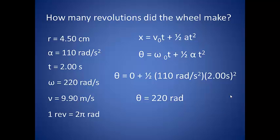we take our number of radians, which was 220, and divide by 2 pi to get 35.0 revolutions.